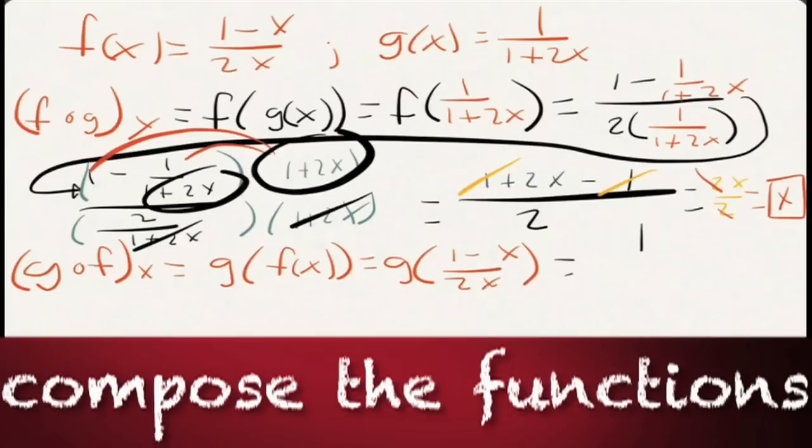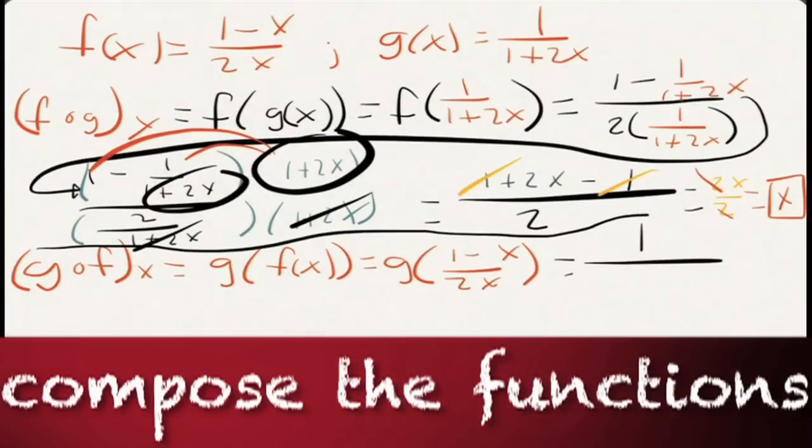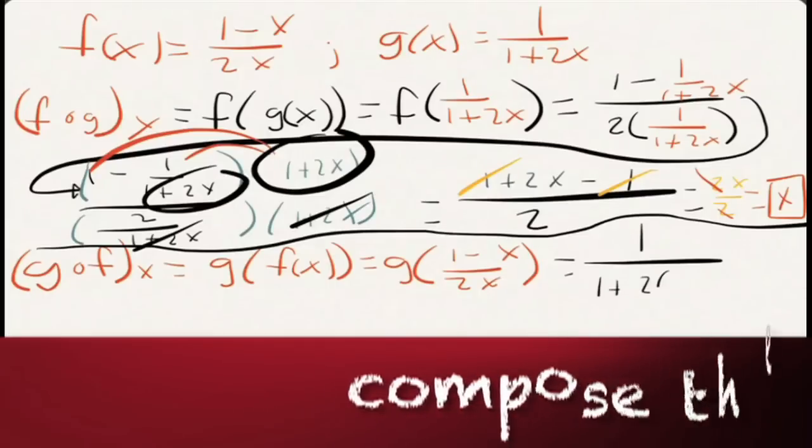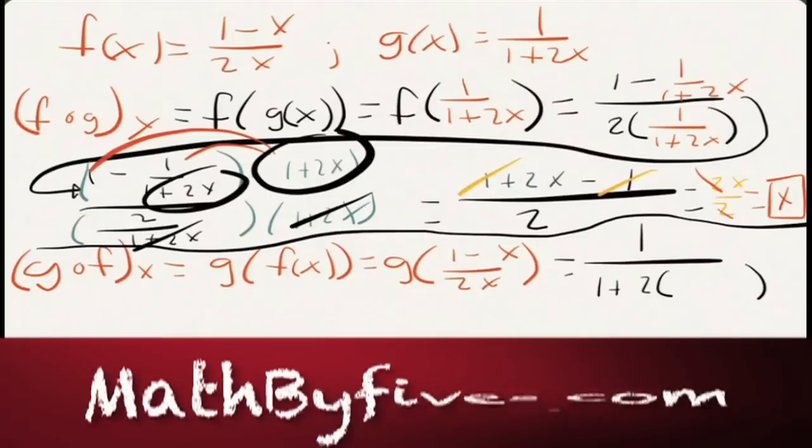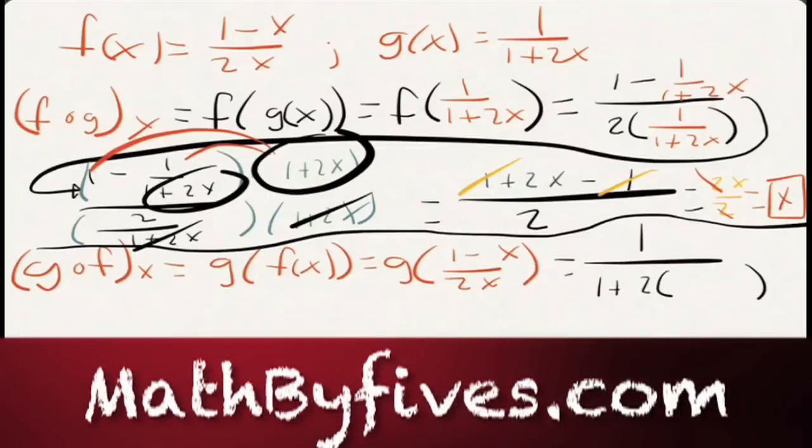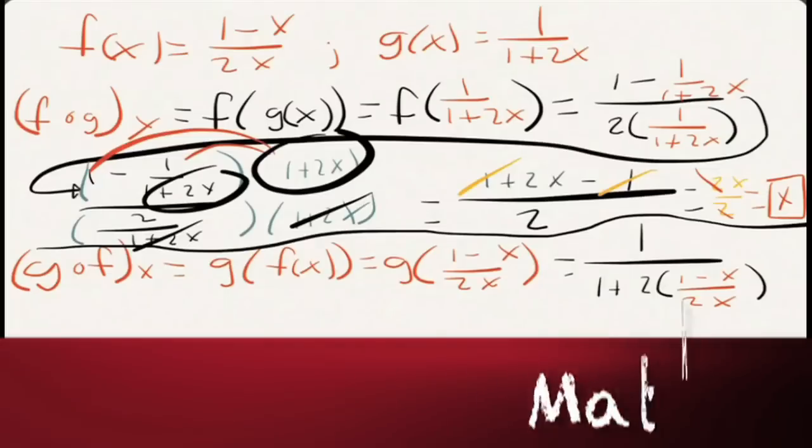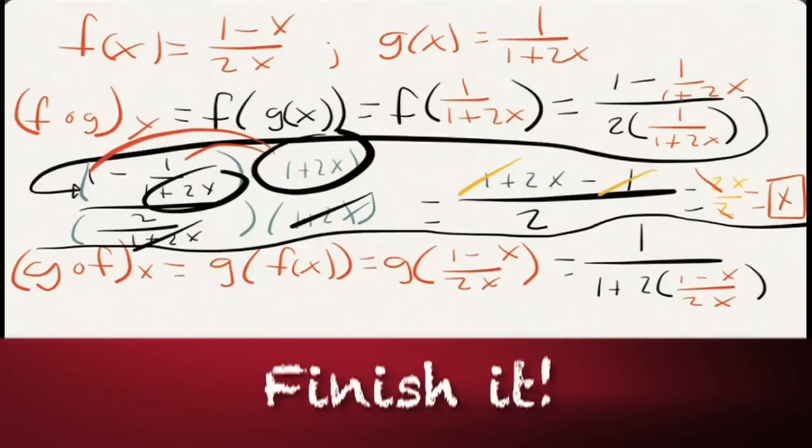Everywhere in g you see an x, you're now going to put that. Let me put a nice dividing line between the two problems. So this is 1 over 1 plus 2 times my new x. My new x is that f of x. And that's going to be 1 minus x over 2x. There we go.